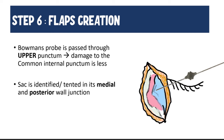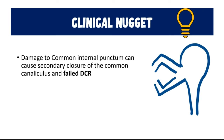The sixth step is identifying the sac to create flaps within it. A Bowman's probe is passed through the upper punctum — this results in less damage to the common internal punctum. As the probe is inserted, the sac is identified at the junction of its posterior and medial border, a process called tenting of the sac. It is very important not to damage the common internal punctum, which is why the Bowman's probe is inserted through the upper and not the lower punctum. Damage to this opening into the common canaliculus can cause secondary closure, leading to a failed DCR.